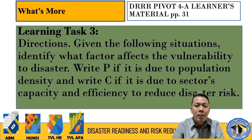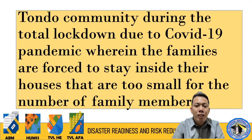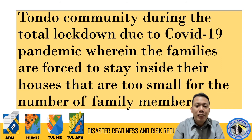Now for the learning tasks. Directions: given the following situations, identify what factor affects the vulnerability to disaster. Write P if it is due to population density, and C if it is due to the sector's capacity and efficiency to reduce disaster risk. Situation: Tondo community during local lockdown due to COVID-19, wherein families are forced to stay inside houses that are too small for the number of family members. The answer is P — population density.